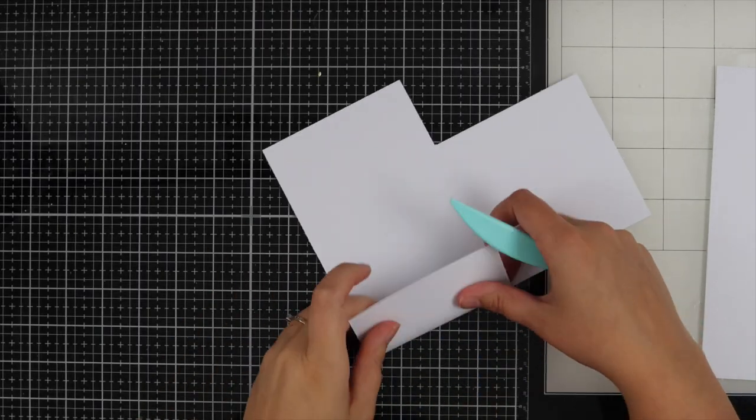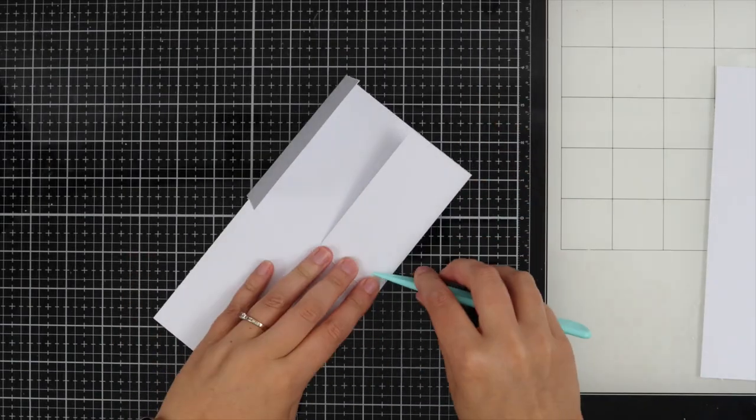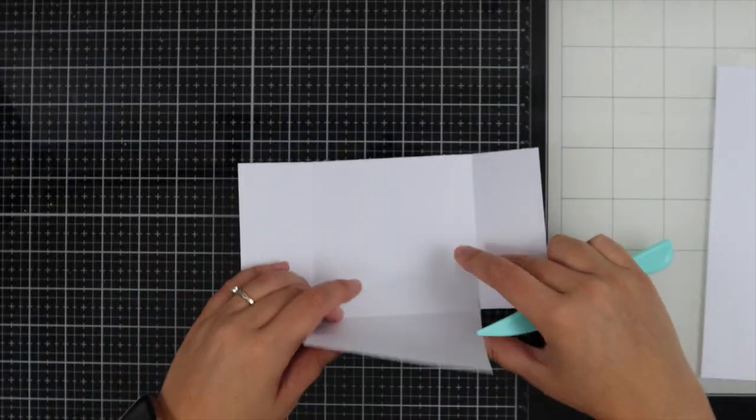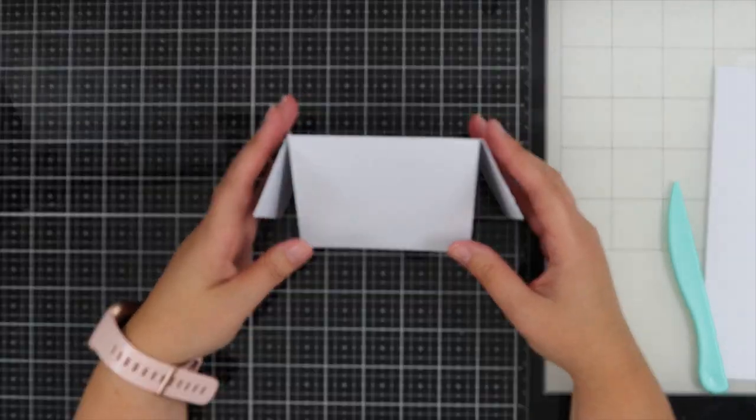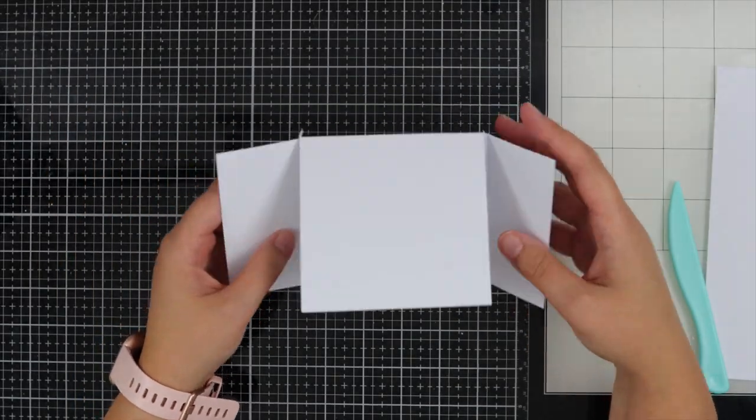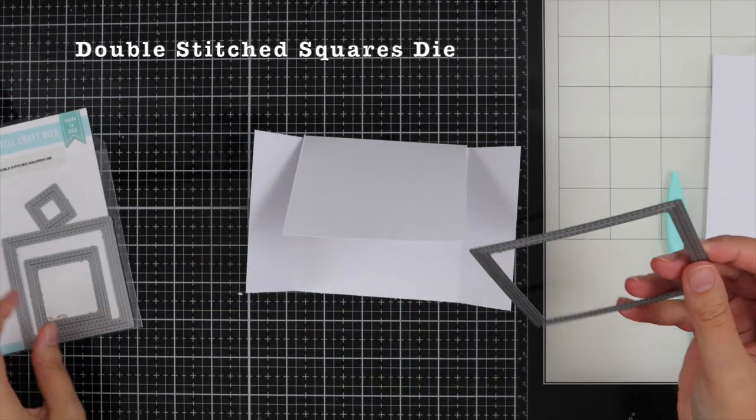I'm going to remove that piece, and this is the card size we're working with. Using my score tool, I'm going over the pieces we scored. This is the card base with your square bit at the front and the two hidden doors.